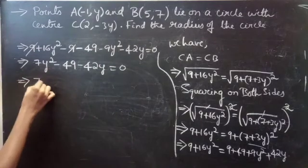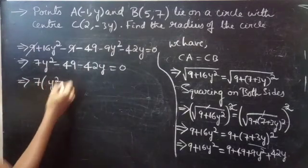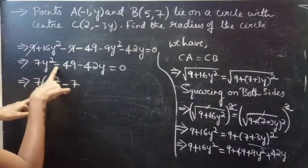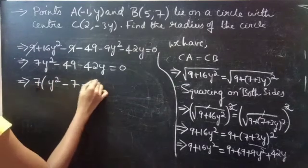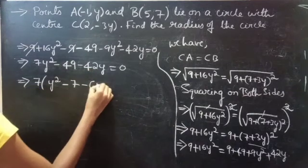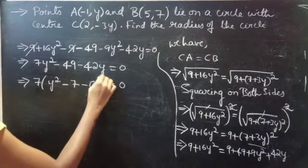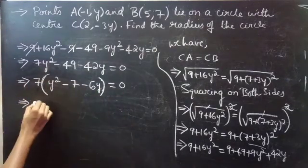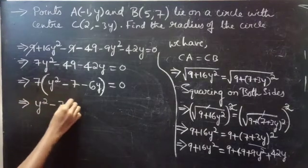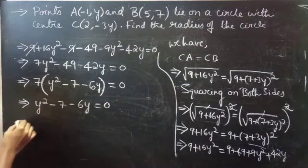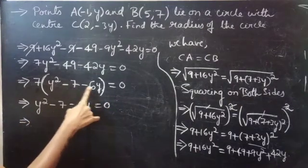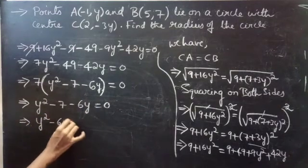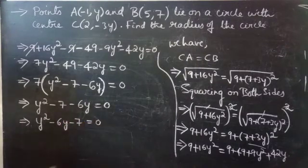So we get 7y² - 49 - 42y equals 0. Now take 7 common from all three terms: 7(y² - 7 - 6y) equals 0. The 7 vanishes, giving y² - 6y - 7 equals 0. We can write this as y² - 7y + y - 7 equals 0.